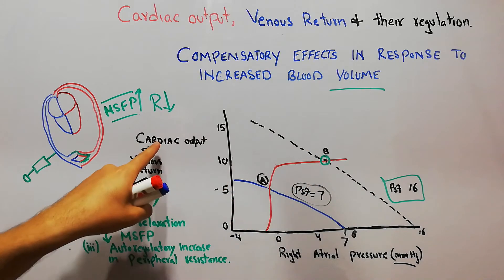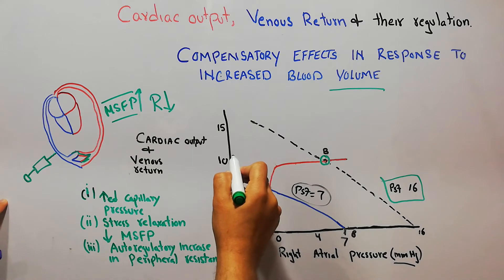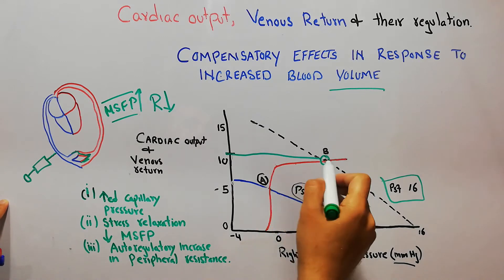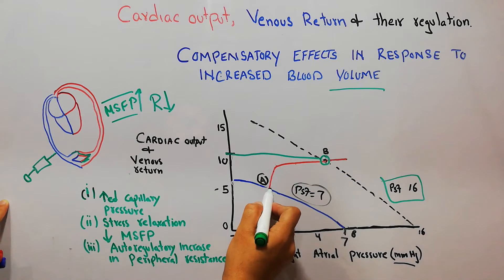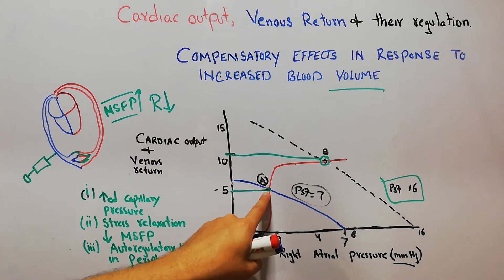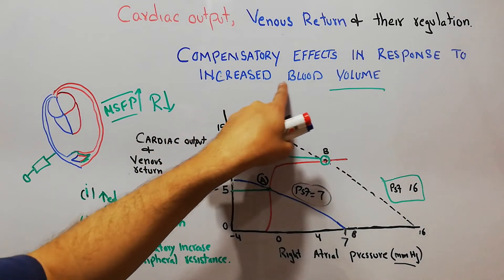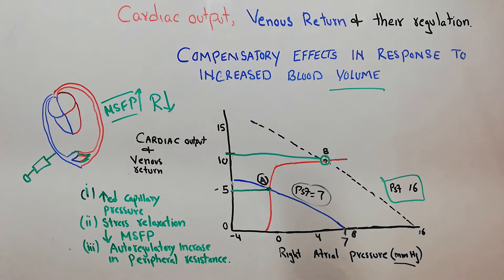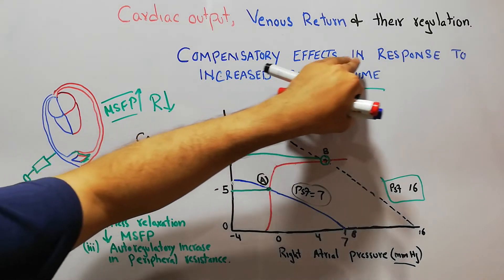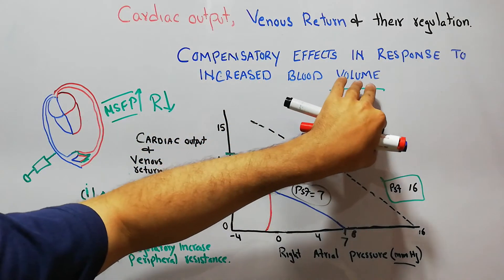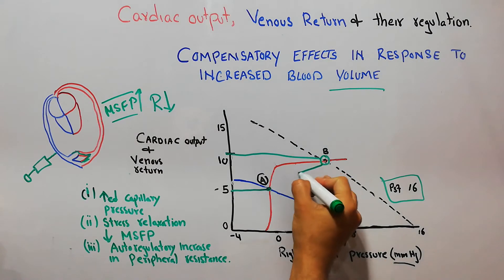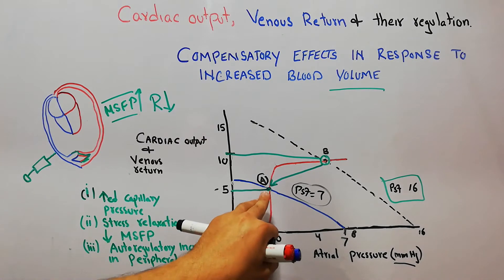At this new equilibrium point B, the cardiac output and venous return are much higher than normal. Initially the curves were meeting at point A for normal individuals, and now they meet at point B after injecting extra volume of blood. The topic of discussion is the compensatory effects in response to increased blood volume — what the body will do to bring point B back to the normal equilibrium point A.